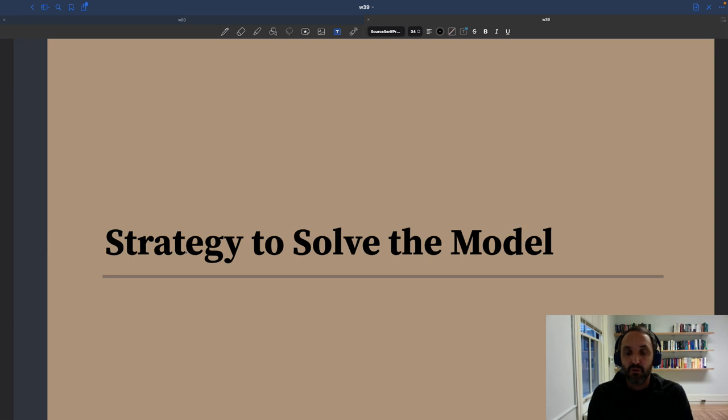We saw that to solve the model, we need to figure out the value of our six variables that are determined by six equations, six relations. So here, let's just think a little bit about the strategy that we're going to follow to solve the model. And it turns out that you can think of the way to solve the model as a two-step process.